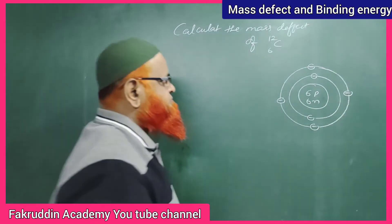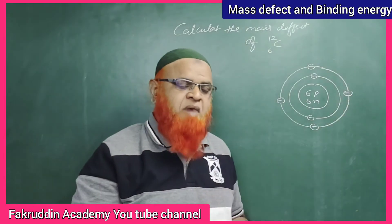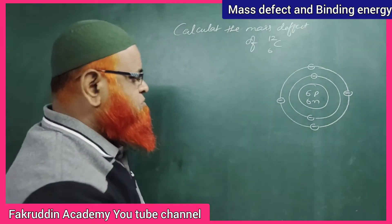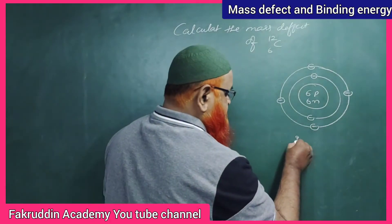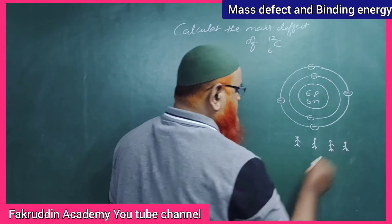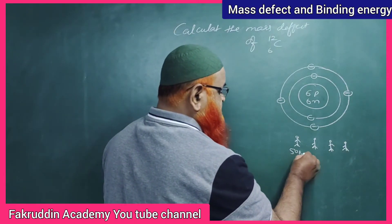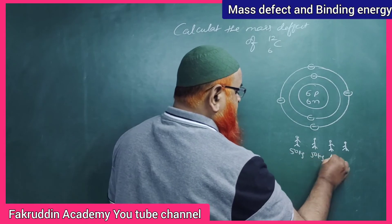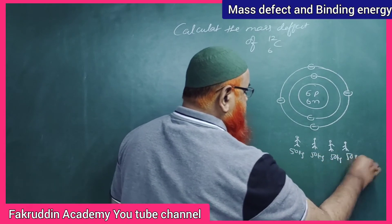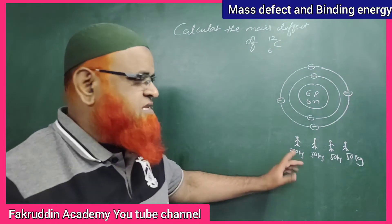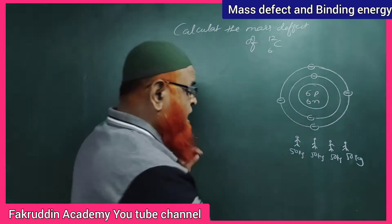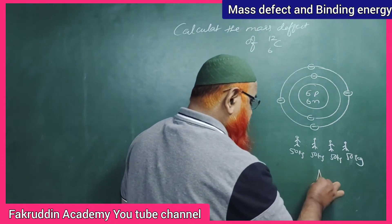Let us understand the meaning of mass defect with a beautiful example. I am taking four players. The individual weight of each player is 50 kg. So all four people, if measured individually, have a weight of 50 kg each. But after the game was played...